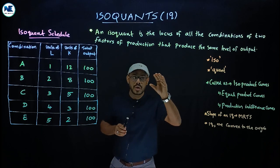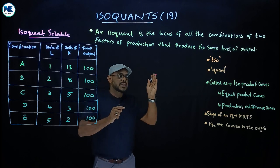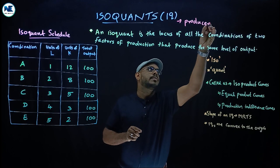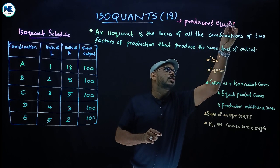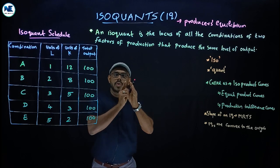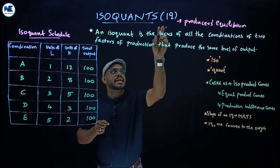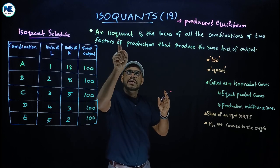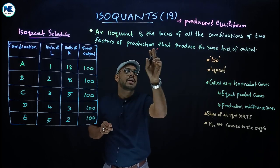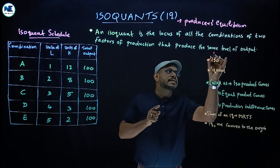From a one or two mark point of view, here is the definition of isoquant. An isoquant — we can also represent it as IQ in symbol format — is the locus of all the combinations of two factors of production that produce the same level of output. The keyword here is 'same level of output.'